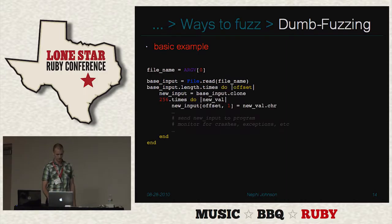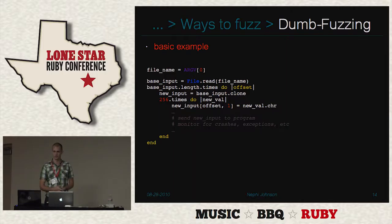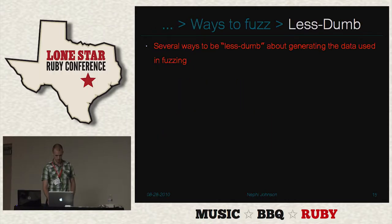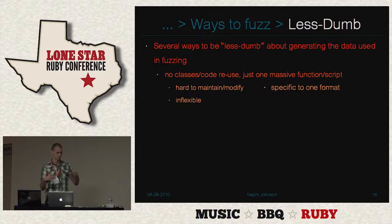Dumb fuzzing is dumb — that's why it gets its name. Here's a basic example: you've got some base file, you read it in, iterate over every byte in the file, and try every possible value. Oddly enough, you do find some interesting crashes and bugs in applications like that. This can be used for file formats, network protocols — anything that accepts a type of input.